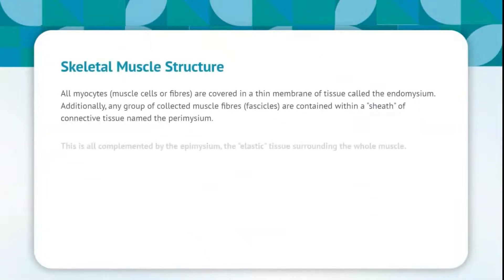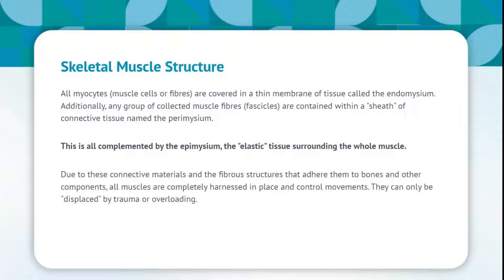Skeletal muscle structure: all myocytes, muscle cells or fibers, are covered in a thin membrane of tissue called the endomysium. Additionally, any group of collected muscle fibers, fascicles, are contained within a sheath of connective tissue named the perimysium. This is all complemented by the epimysium, the elastic tissue surrounding the whole muscle. Due to these connective materials and the fibrous structures that adhere them to bones and other components, all muscles are completely harnessed in place and control movements.